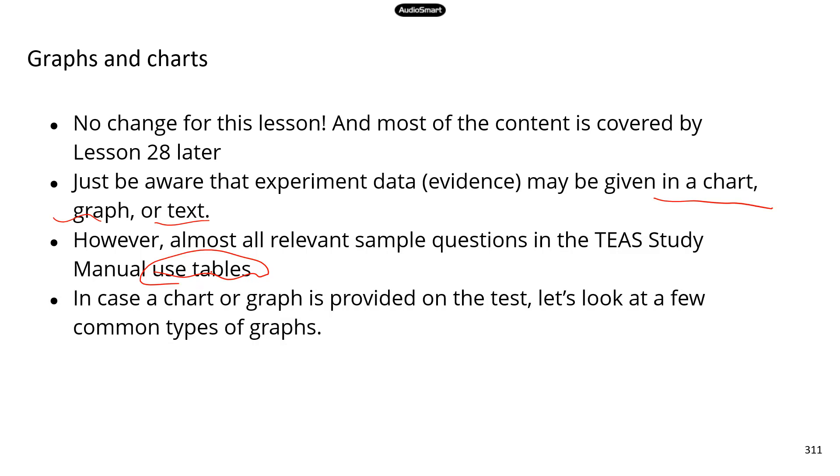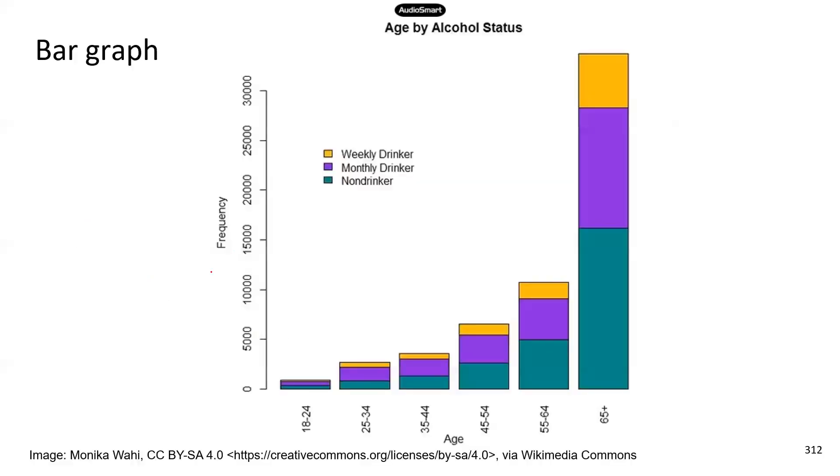So make sure you are familiar with any of these formats. Just in case that you're going to get a graph or a chart, let's look at a few common types of graphs to get you used to the different ways of data presentation. So the first common type of graph is a bar graph. And there are a few key components. First of all, there might be a graph title. So in this graph, the title is age by alcohol status.